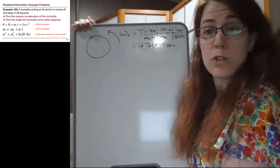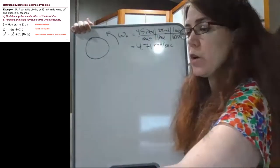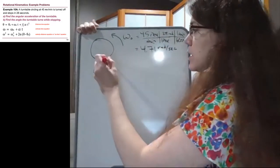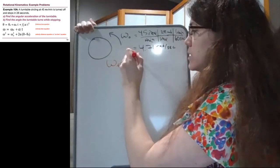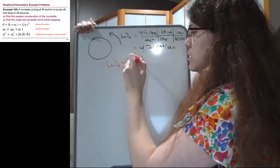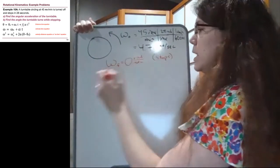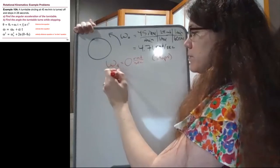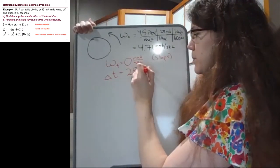All right, we also are told that it stops in 28 seconds. So we know that later in the problem, the omega final is zero because that's what stops means. And the elapsed time is 28 seconds.